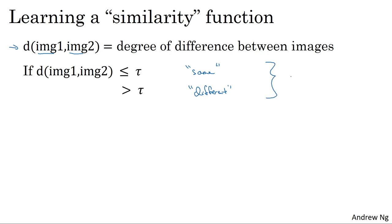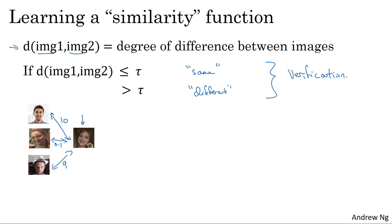And so this is how you address the face verification problem. To use this for a recognition task, what you do is given this new picture, you would use this function D to compare these two images. And maybe it'll output a very large number, let's say 10 for this example. And then you compare this with the second image in your database. And because these two are the same person, hopefully it'll output a very small number. And then you do this for the other images in your database and so on.